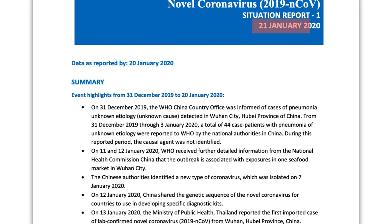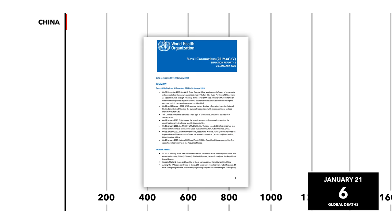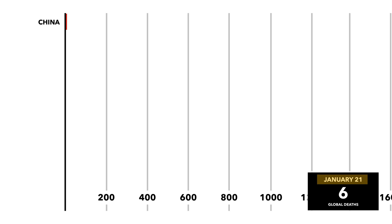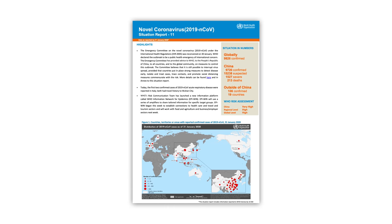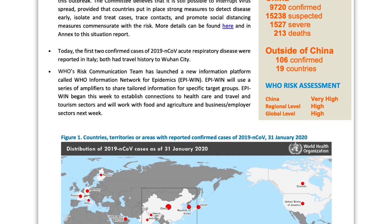Our graph starts when the WHO started releasing their daily reports on the virus's spread. So by the first report on January 21st, six people had died, all in China. And this Chinese focus continued throughout the balance of January. The virus was spreading around the world at this point, and by January 31st there were 106 cases in 19 countries, but no deaths outside of China.